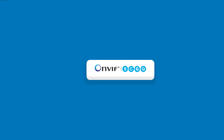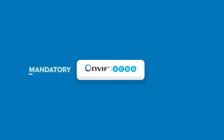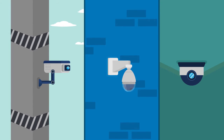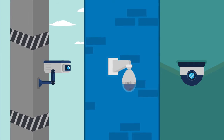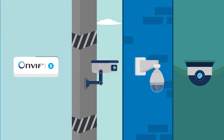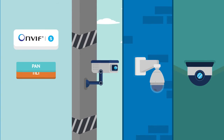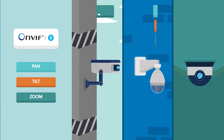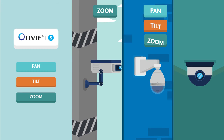An ONVIF profile has mandatory and conditional features. For instance, a conditional feature in Profile S is support for Pan-Tilt-Zoom control, which applies only to specific cameras like PTZ cameras.